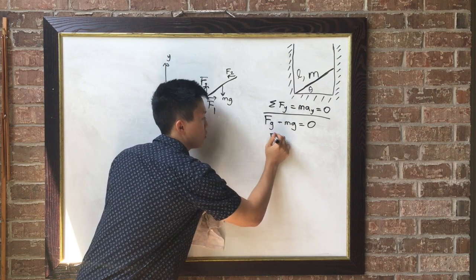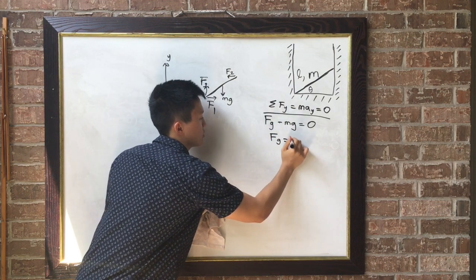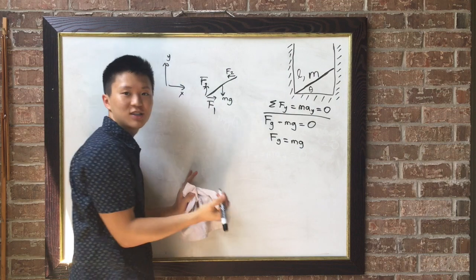So then F sub g, the normal force from the ground, is just equal to mg. We've already solved for one force.